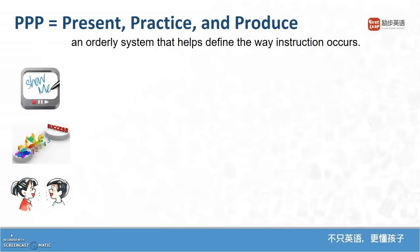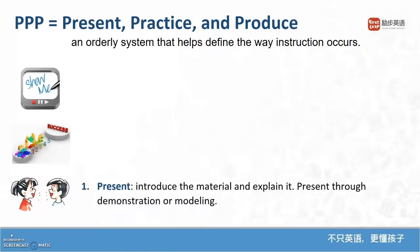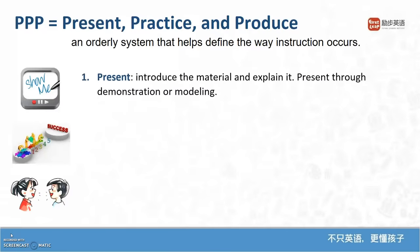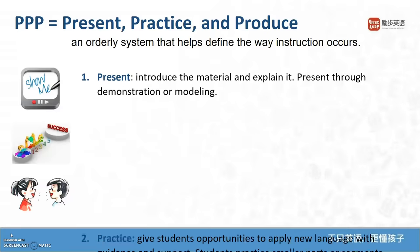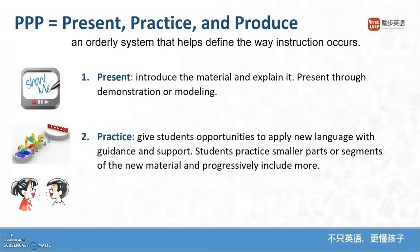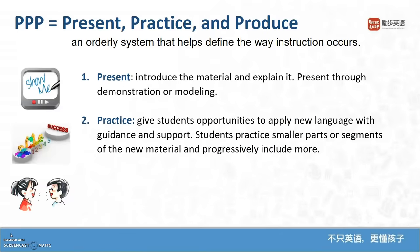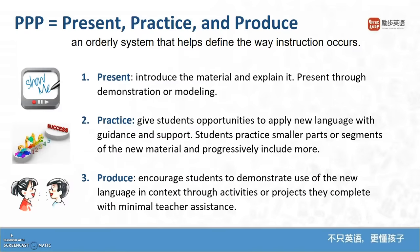One way to understand the value of PPP — Present, Practice, and Produce — is to see it as a way of ordering instruction. First, the teacher presents vocabulary, sentence structures, or information about topics. Next, the students are given opportunities to engage in guided practice. And third, students engage in activities that allow them to use and produce language and new knowledge.